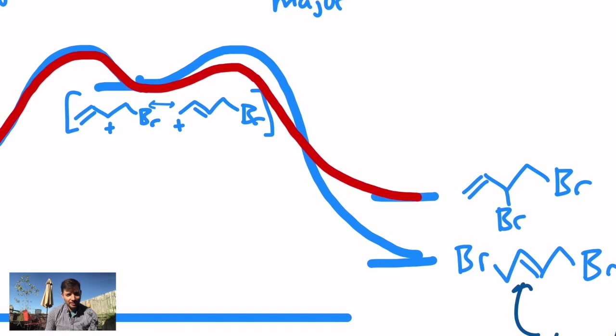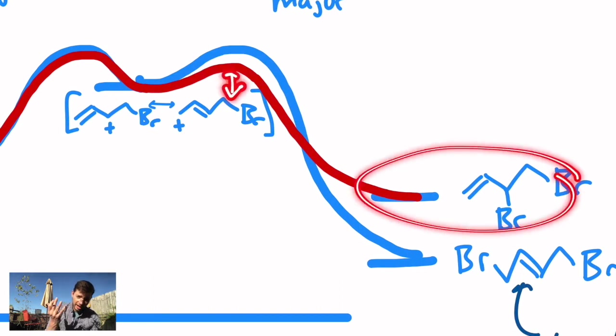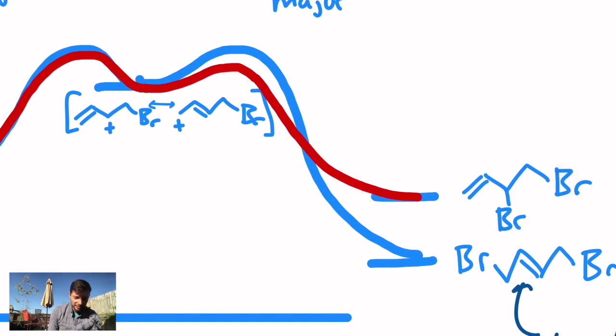But that's kind of an amazing thing in the laboratory because that means we can control it just by how much energy we give it. If we give it just enough energy, for example, cold temperatures, to only bypass that lower activation energy hump, we can funnel it into the kinetic product. If we give it a lot of energy, enough to overcome the higher activation energy, it can funnel into the more stable thermodynamic product.